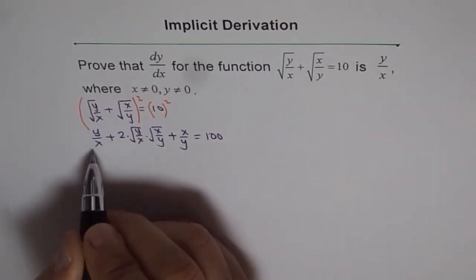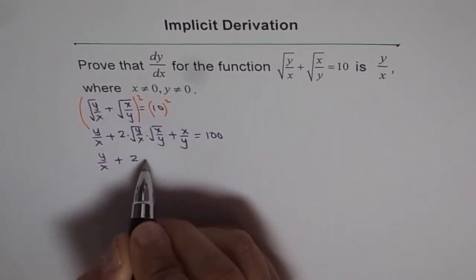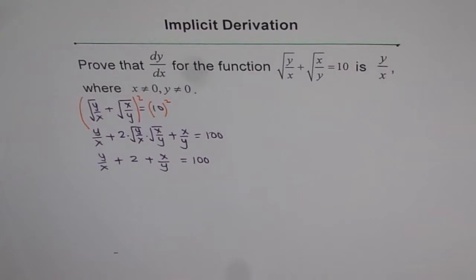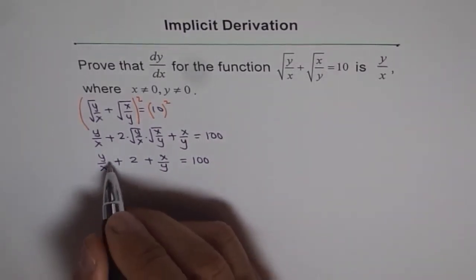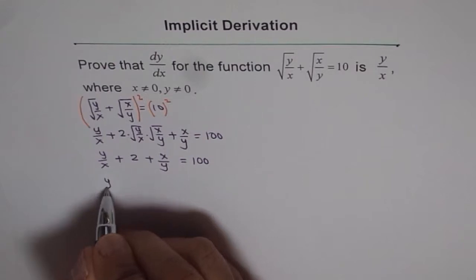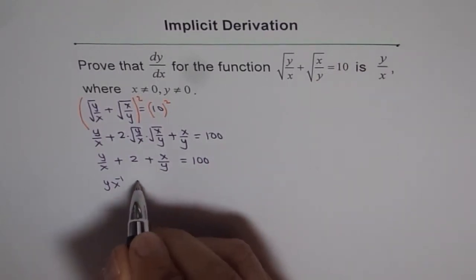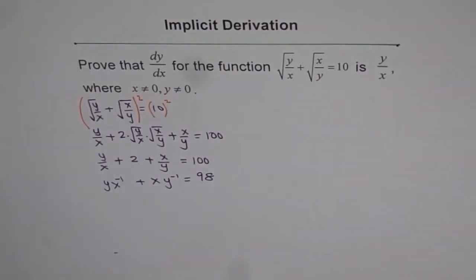Now here we have y/x + 2 + x/y = 100. So that is our equation. Now once we get this equation, we can find the derivative of this equation. So we will write this in the form with minus power, so that we use the power rule. So we write yx⁻¹, let me take 2 on the other side, so it becomes 100 - 2 = 98, plus xy⁻¹ = 98. So that becomes a simplified form of the given equation.